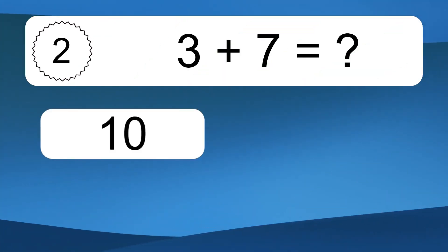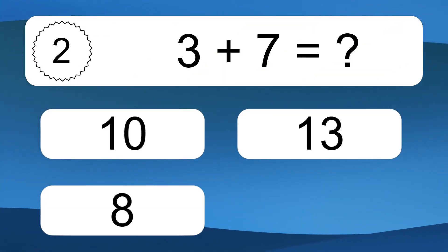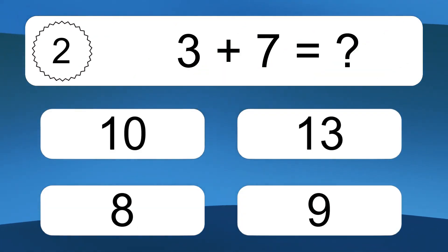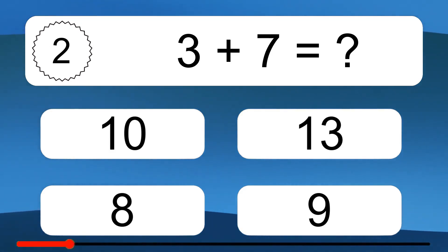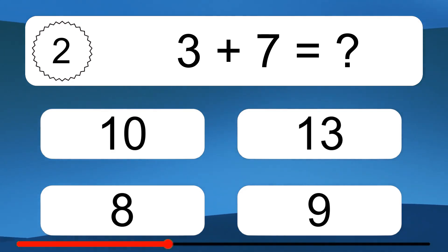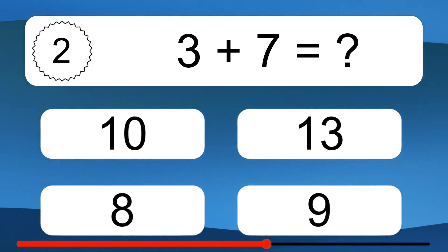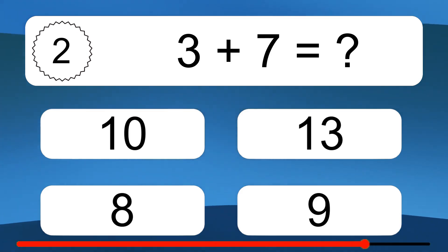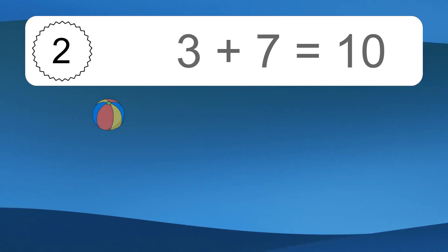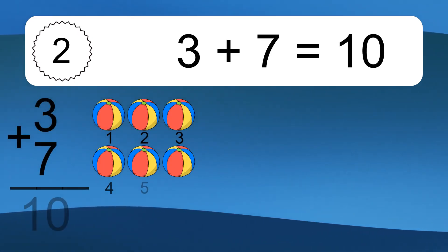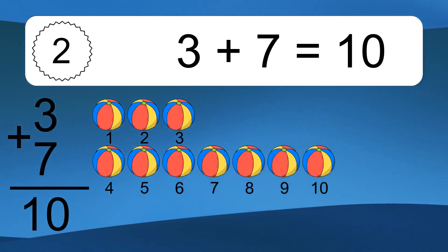3 plus 7 equals what? 3 plus 7 equals 10.